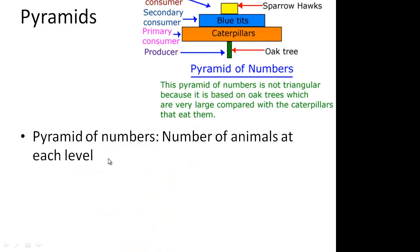Our third pyramid is a pyramid of numbers. It's a number of animals at each level. The thing to remember about this pyramid is it doesn't always look like a normal triangle. Because, as this one shows you, it is based off of the initial oak tree, which is very large compared to the caterpillars. So there are more caterpillars that can live in this one tree. Then we go up to our blue tits, and then our sparrow hawks. So this one will show us the number of animals at each level.